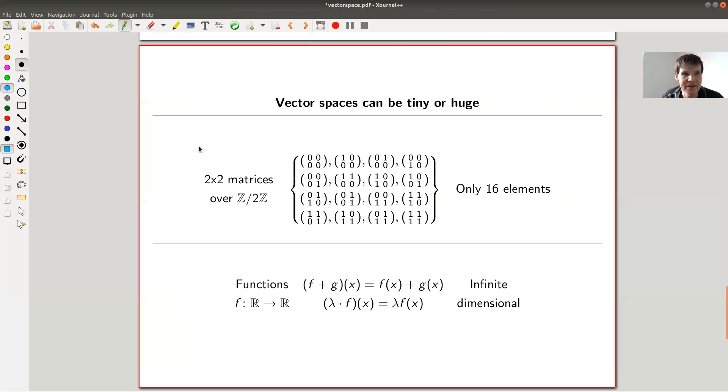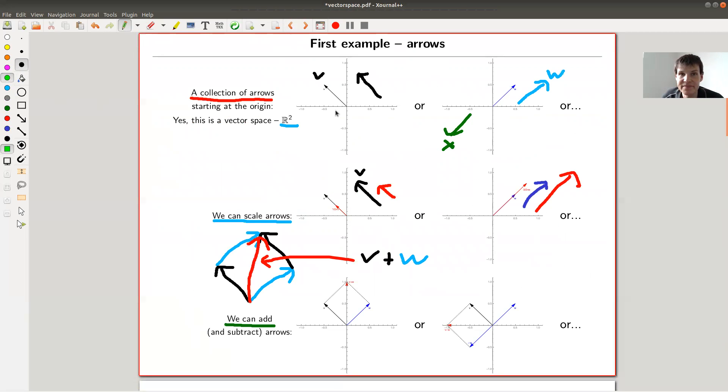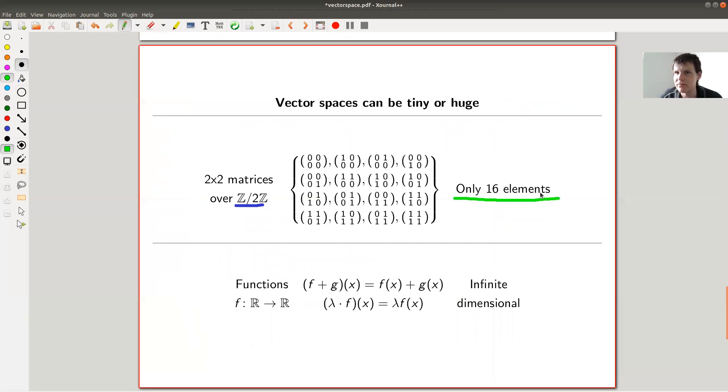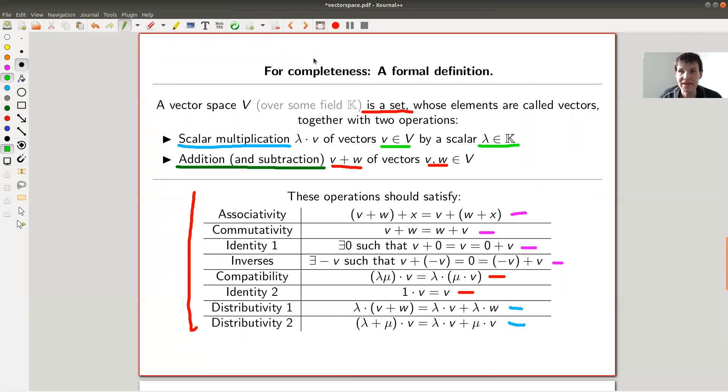So what is also a vector space would, for example, be two by two matrices over some finite field, like Z mod two. So the only entries I allow are zero and one. That's the only thing I say. And well, one plus one is zero. And you just count. And this vector space has only 16 elements in total. This is completely different from everything you've seen before, like infinitely many vectors. You can just choose your favorite point and there's a vector, sorry, an arrow. There are infinitely many arrows. Choose a favorite point, there will be an arrow pointing to that point. And here you only have finitely many elements, finitely many vectors. Very surprising. Still fits into the same framework. That's amazing.